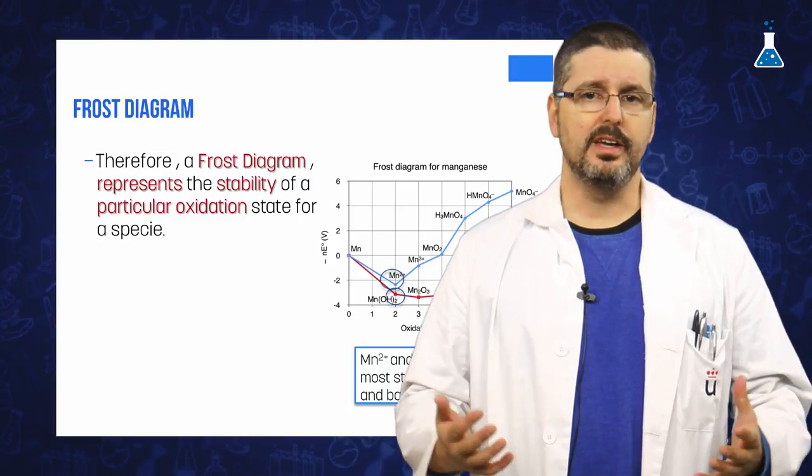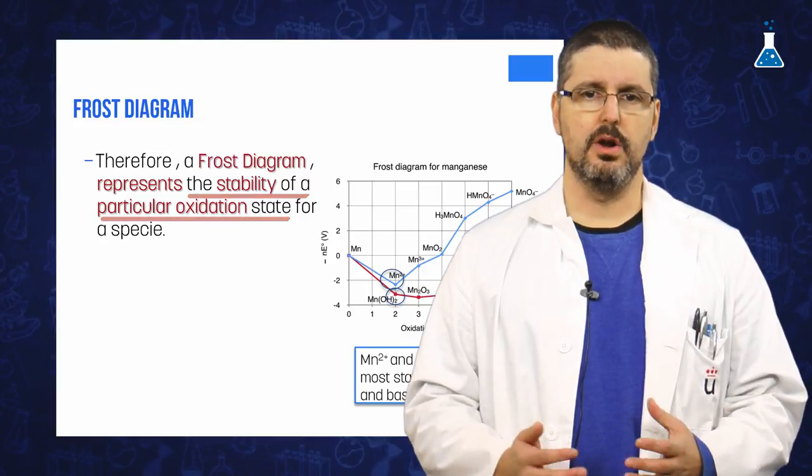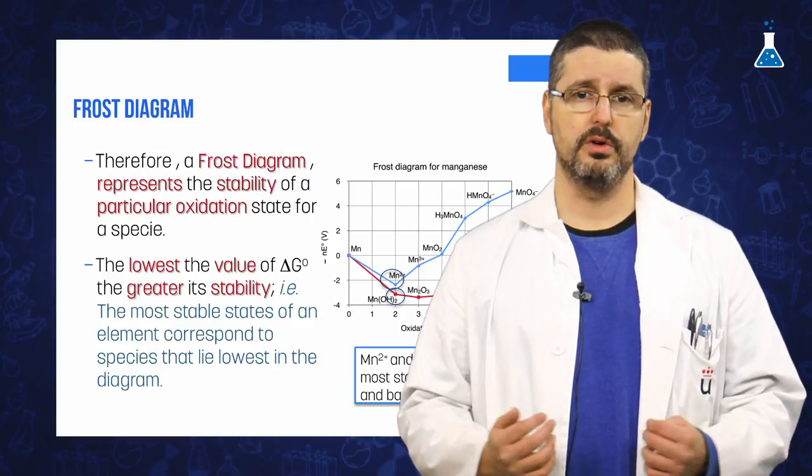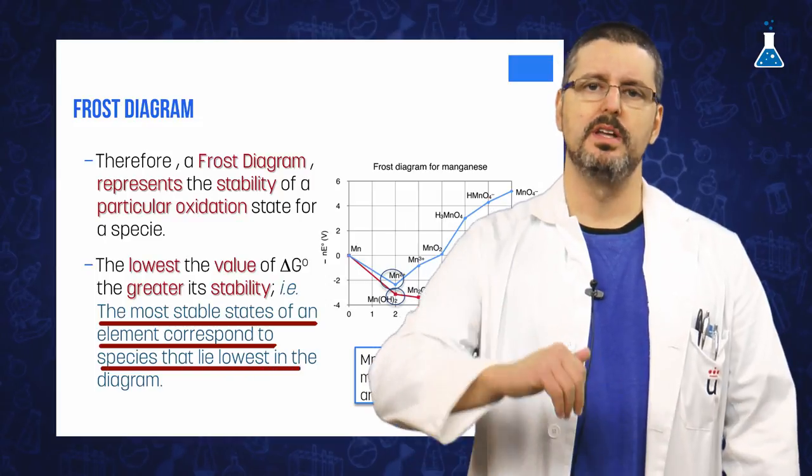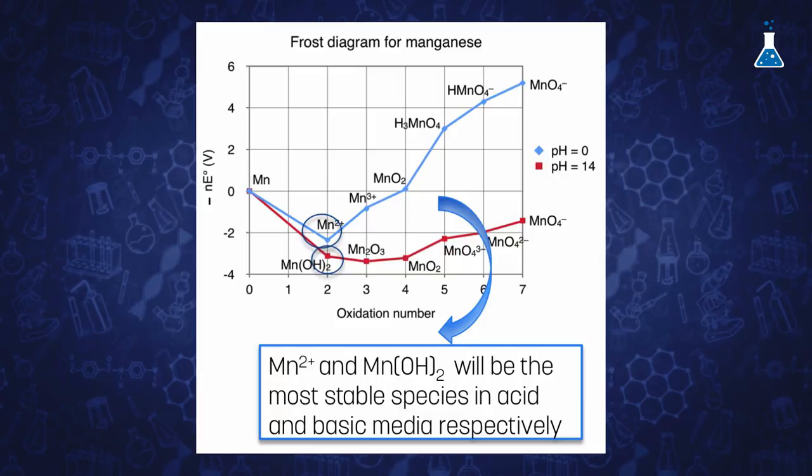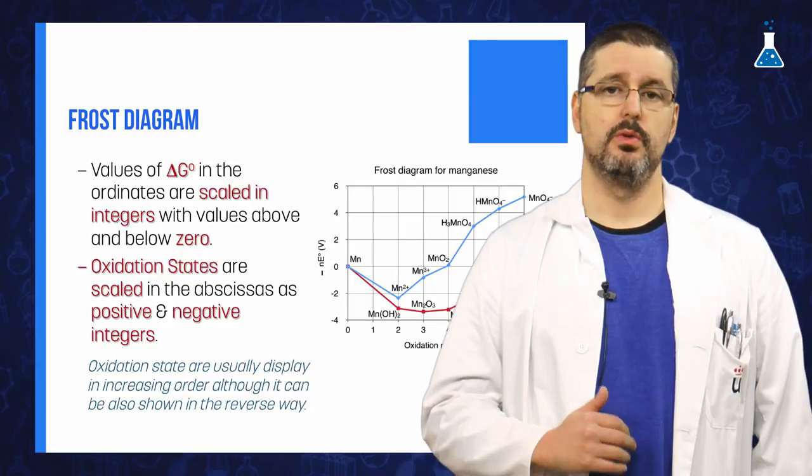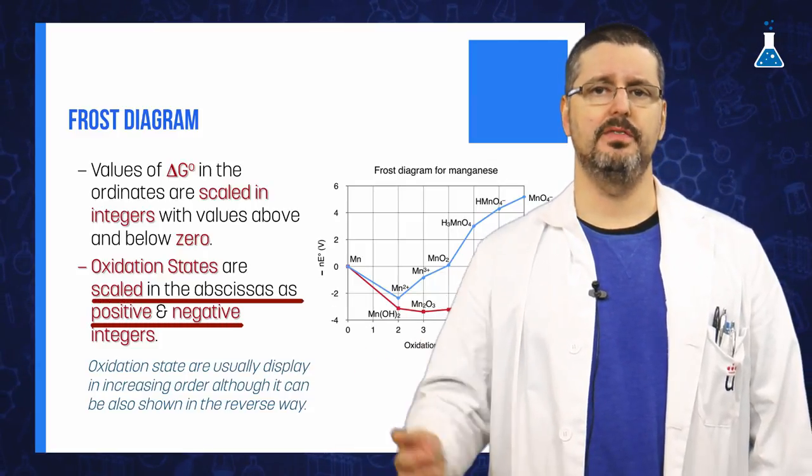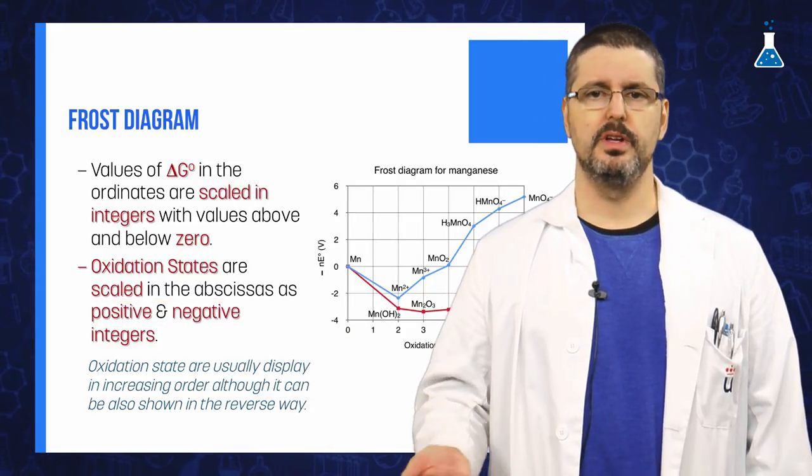That representation will indicate the stability of a particular oxidation state of an element. Since the lower the value of the free energy, the greater its stability. In other words, the most stable state of an element corresponds to species that lie lowest in the Frost diagram. The values of free energy changes in the ordinate are scaled in intervals with values above and below zero, while oxidation states are scaled on the abscissa as positive and negative integers, usually in increasing order, although it can also be shown in the reverse way.